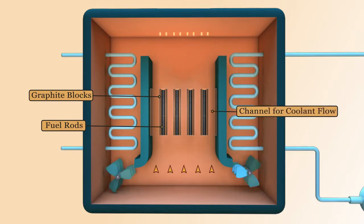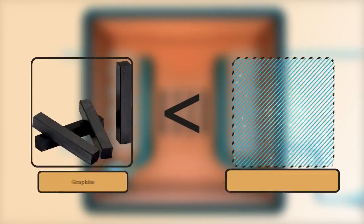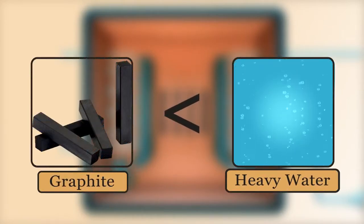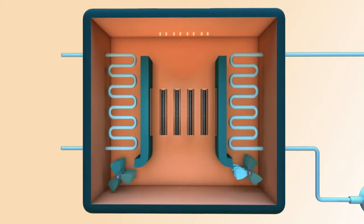Graphite is less effective than water, which causes nuclear fissions on a bigger scale. For this reason, the gas cooled core has a large volume to facilitate better heat removal.